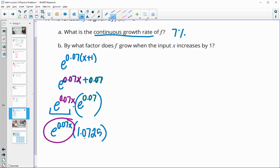So that's the factor different from the original. This was our original year, and then an extra one year gave us this extra factor here. By what factor does it grow? 1.0725. So that would be your growth factor every time it's increased by 1.